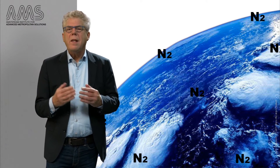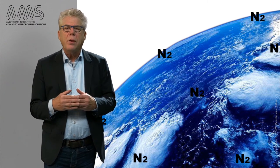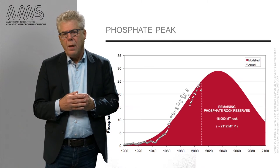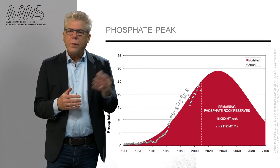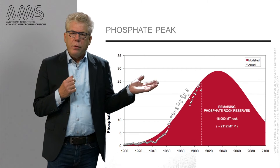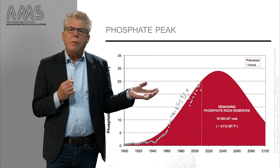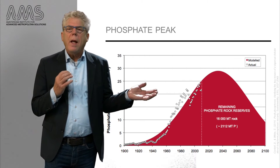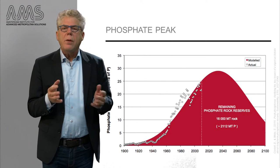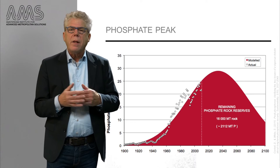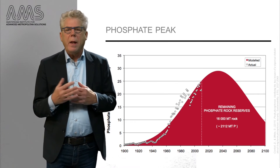It is estimated that about 1% of the global energy used is actually used for fixing nitrogen from the atmosphere. Phosphorus, on the other hand, is a non-renewable resource and its availability is estimated to decline drastically in the coming decades.